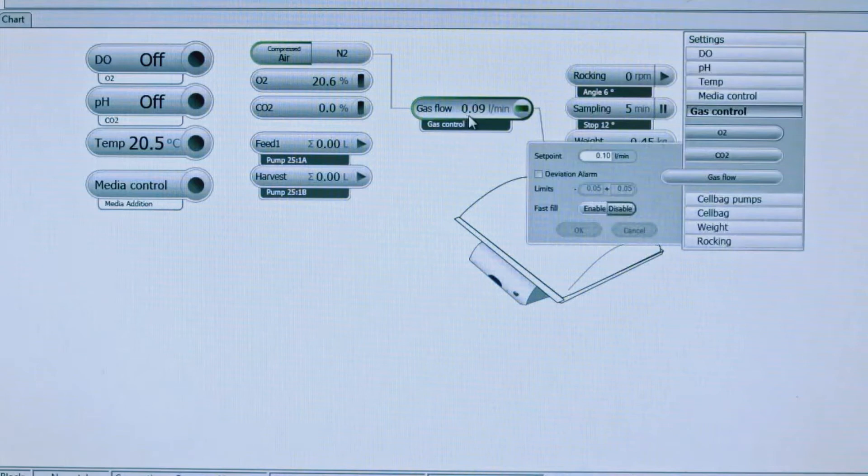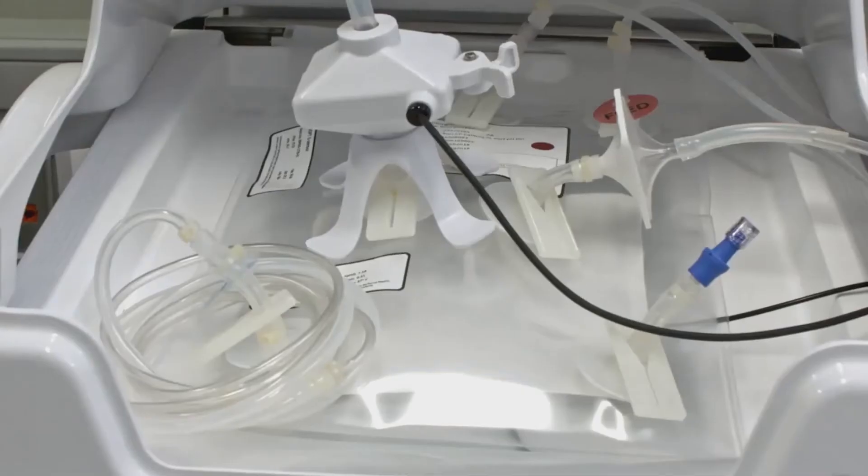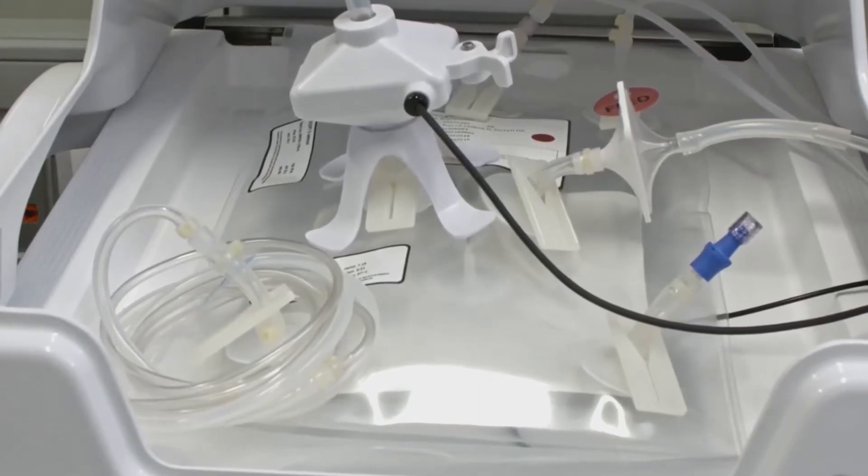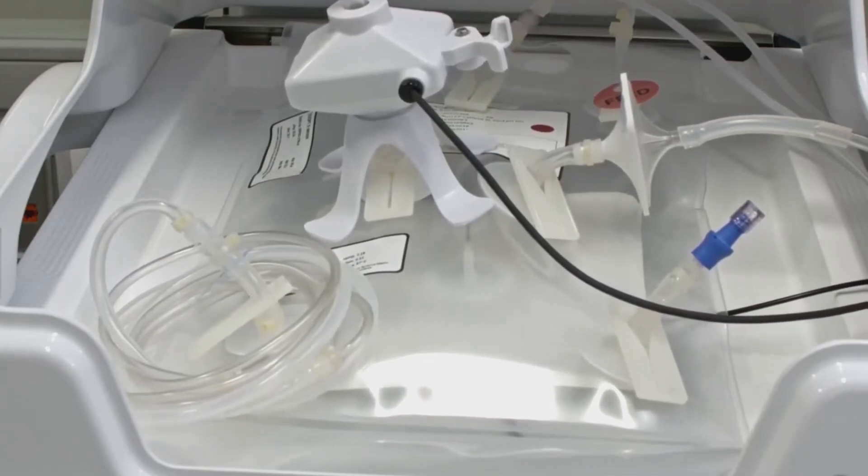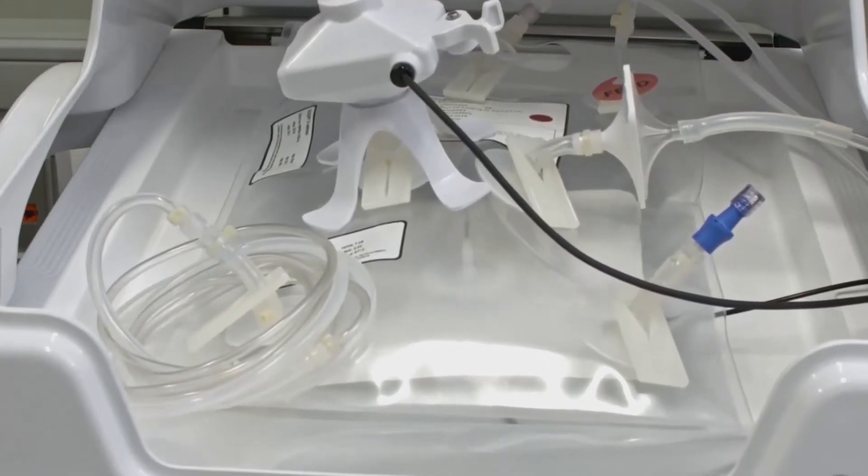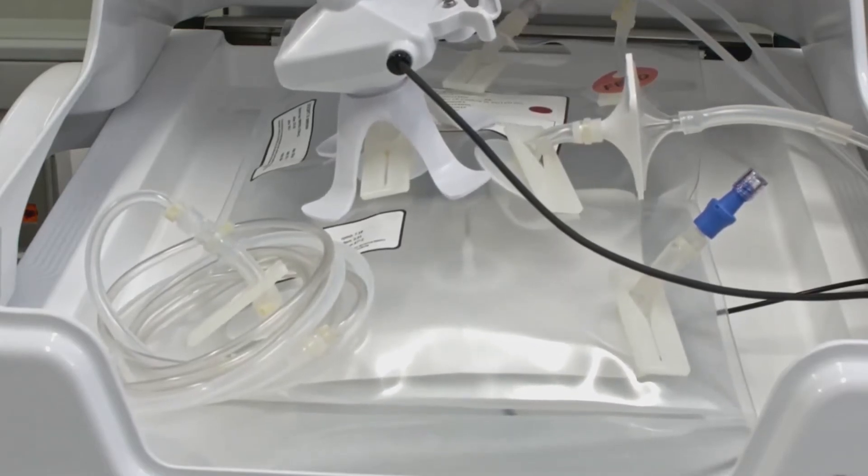You'll also want to enable fast fill, which will go from the 0.1 liter per minute set point to a 3 liter per minute set point for the gas flow into the cell bag. You can now set your CO2 to whatever set point you would like. Once fast fill is enabled, it will fill the bag with your mix of air and CO2. It will only last for 30 minutes and then it will automatically switch off to your designated set point of however many liters per minute you want. Fast fill will also automatically crack the check valve so there is no need to press on the bag.